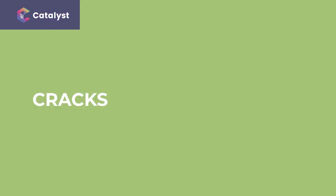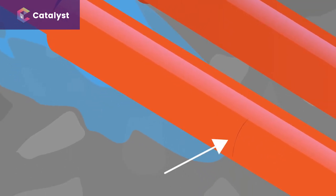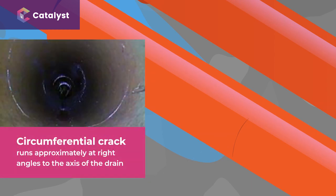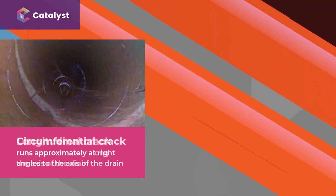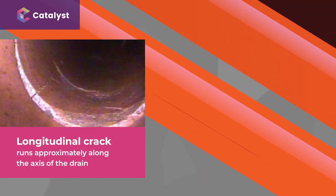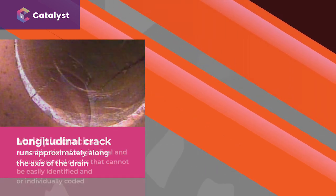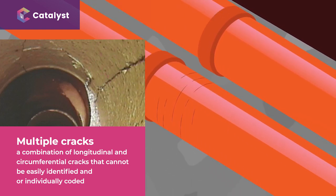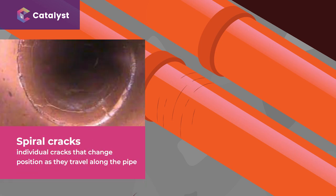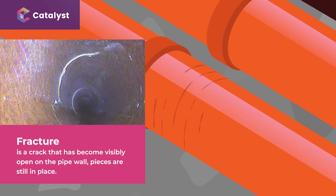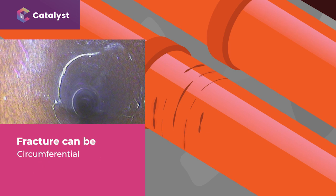Moving on to cracks. A crack is a defect in a pipe that is not visibly open — the pieces have not moved apart. A circumferential crack runs approximately at right angles to the axis of the drain or sewer. A longitudinal crack runs approximately along the axis of the drain or sewer. Multiple cracks are a combination of longitudinal and circumferential cracks that cannot be easily individually coded. Spiral cracks are individual cracks that change position as they travel along the pipe. A fracture is a crack that has become visibly open on the pipe wall, but pieces are still in place. Just as with cracks, fractures can be circumferential, longitudinal, multiple or spiral.